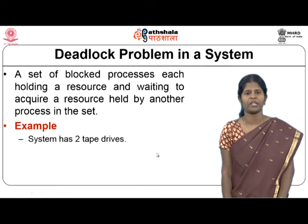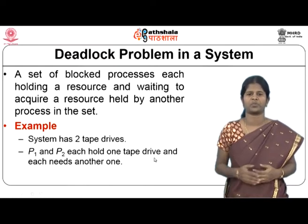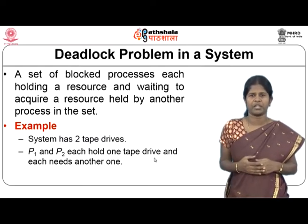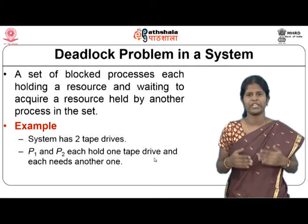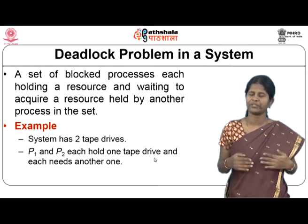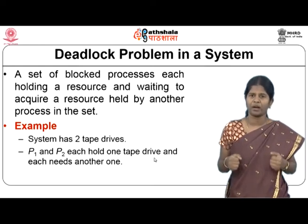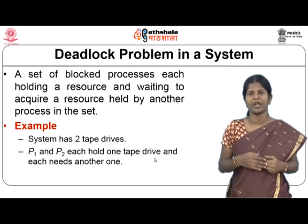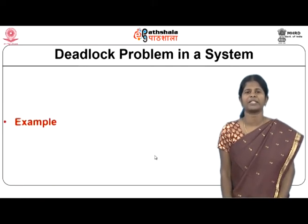Consider a system with two tape drives and two processes P1 and P2. P1 is holding one tape drive and P2 is holding the other. Each process needs both tape drives to finish its work. P1 waits for the tape drive held by P2, and P2 waits for the tape drive held by P1. Both processes wait for each other, resulting in a deadlock.